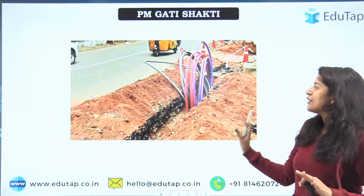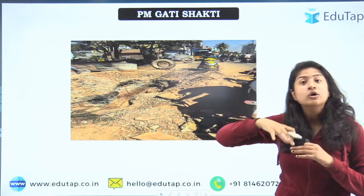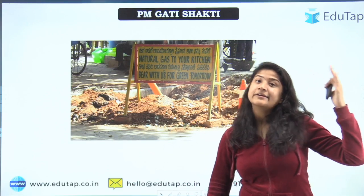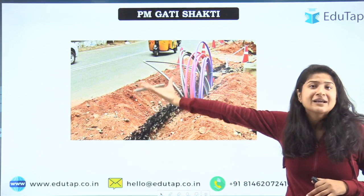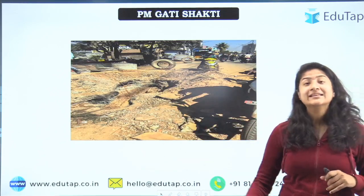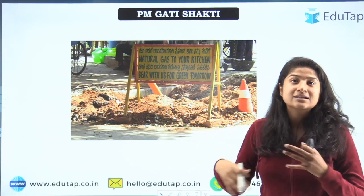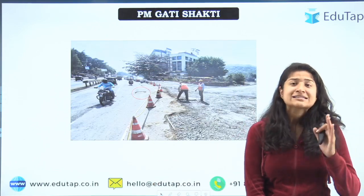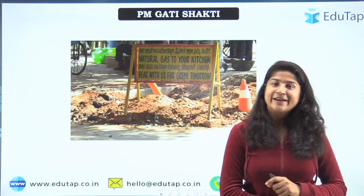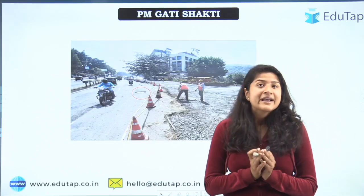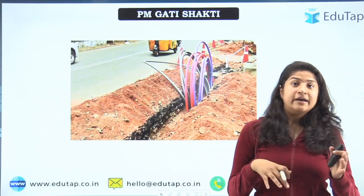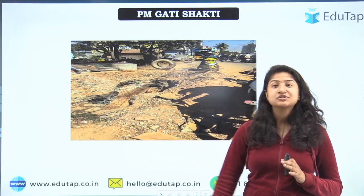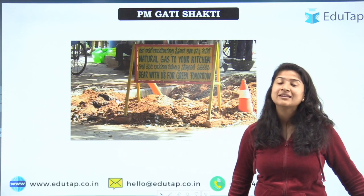This is a very common scenario you must have observed in India — roads are laid first, and then the government realizes they have to set up pipelines or optical fibers underneath the roads. Then the roads are dug again and everything is redone. This causes a lot of economic damage to the government as well as inconvenience to the common man. To tackle this problem, the government came up with PM Gati Shakti.